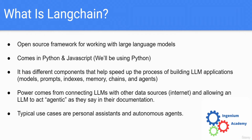LangChain is a Python package - we're going to use the Python package, and you can also use it in JavaScript - that allows us to use some built-in functions and access those models and do things that people usually do when they build projects with these models, a lot faster. So what does LangChain give us other than access to these models that makes it such a good framework?